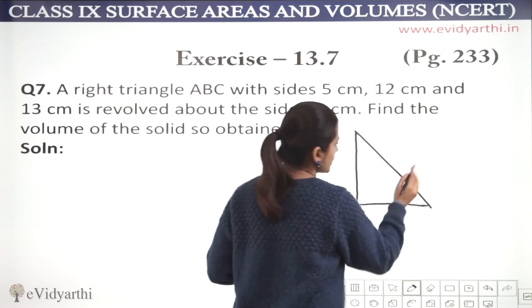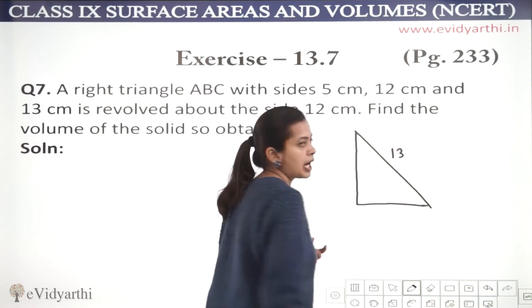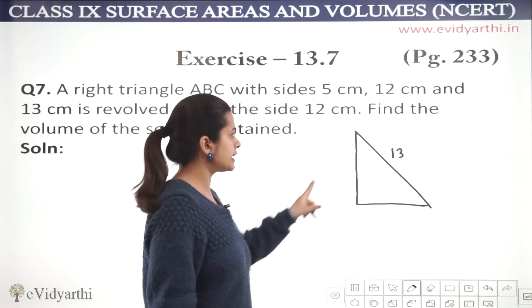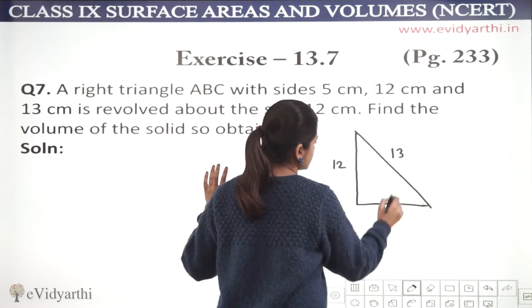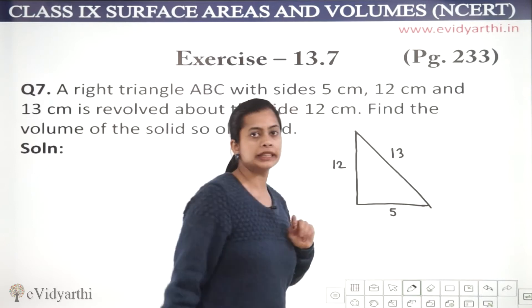Now, we know that the largest side, we always give our hypotenuse to the largest side. So, I have taken this 13. Now, take this 12 and this base is 5.